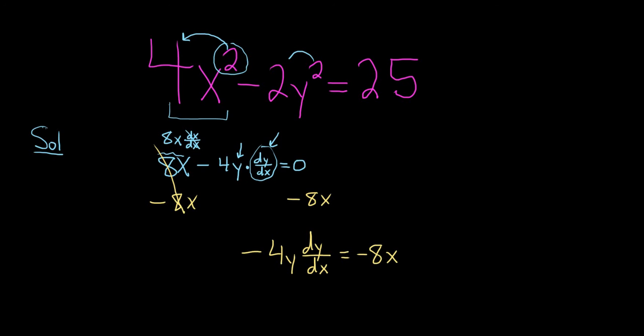To finish solving for dy/dx, we'll divide both sides by negative 4y. So divide and divide. These cancel.